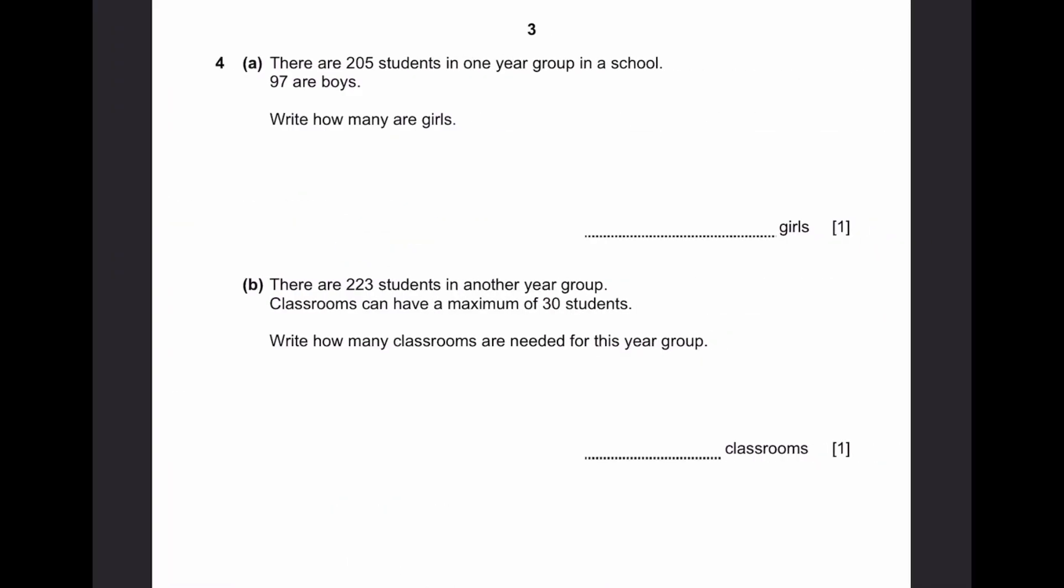Question 4A. There are 205 students in one year group in a school. 97 are boys. Write how many are girls. 205 minus 97 because girls and boys are the only ones. And when you subtract, we get the answer 108. That's the answer.